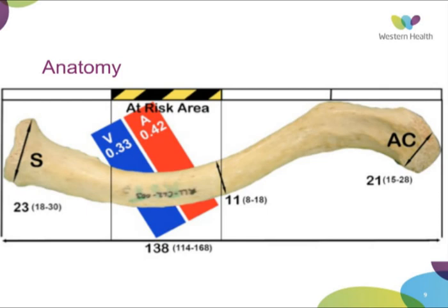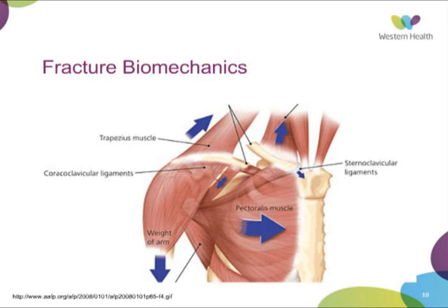When the clavicle fractures, you get the characteristic configuration, especially for mid-shaft clavicle fractures, where the medial fragment is pulled superiorly and the lateral fragment is pulled inferiorly by the weight of the shoulder girdle, acting with a rotary force which opens the fracture. Medially, you have the pull of the sternocleidomastoid pointing upwards and displacing the fracture proximally.